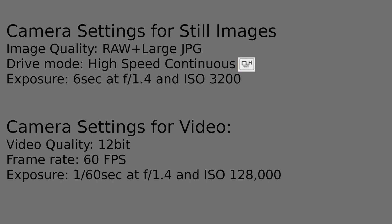To capture meteors, first I set up my camera settings. For still images, I set the image quality to raw and large JPEG. The raw file is important for post-processing the image. The JPEG files are useful for reviewing frames. I enable high speed continuous on the camera, which allows the camera to take continuous exposures when I lock the button on the shutter release cable. Depending on sky conditions, I usually do 6 second exposures with my lenses wide open at f1.4 and an ISO of 3200.